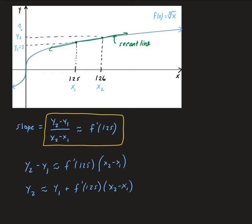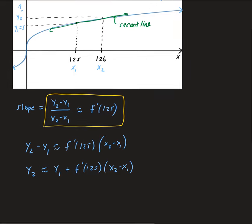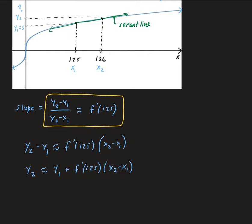So we want to find Y2 — that's the cube root of 126, which is what we're looking for. It can be approximated by Y1, which we know, plus the derivative evaluated at 125, which we can calculate, times X2 minus X1. Plugging in: Y2 is approximately Y1 = 5, plus F prime of 125, times 126 minus 125.